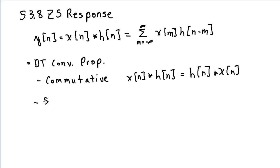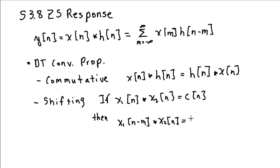The shifting property applies. For example, if x1 of n convolved with another sequence, x2 of n gives me a third sequence, c of n, then it is true that if I shift either one of the sequences, say by m to the right, that will shift the output by the same amount. If I shifted the other sequence to the right, the output would be further shifted to the right.